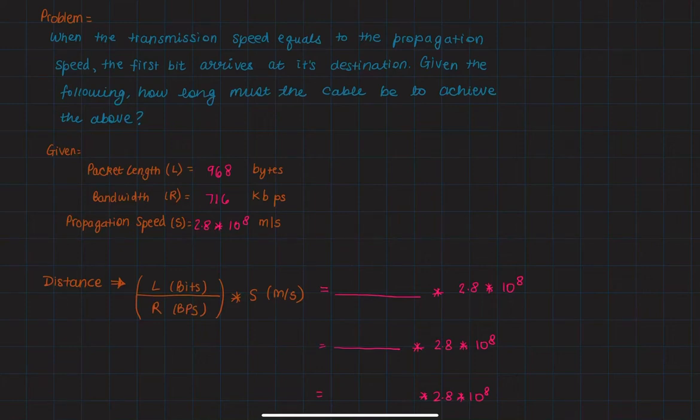Okay, so in this problem, when the transmission speed equals the propagation speed, the first bit arrives at its destination. Given the following, how long must the cable be to achieve the above?